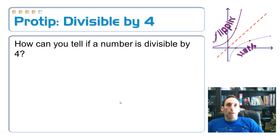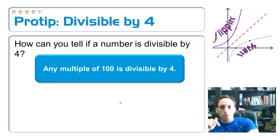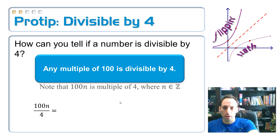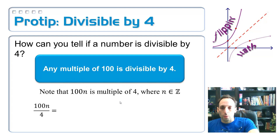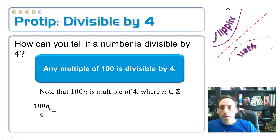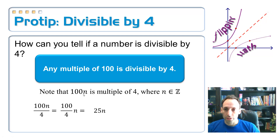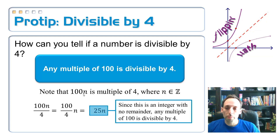What if your number is really big — something in the thousands? There's a number sense trick: any multiple of 100 is automatically divisible by 4. Here's why: 100n divided by 4 equals 25n, which is still an integer, so any multiple of 100 is divisible by 4. That means all you have to do is look at the last two digits, because everything else is a multiple of 100. If the last two digits are divisible by 4, then the whole number is divisible by 4.